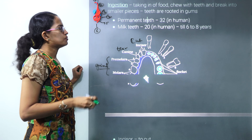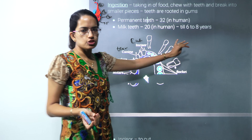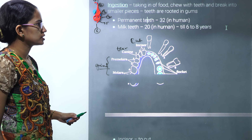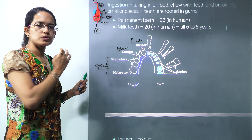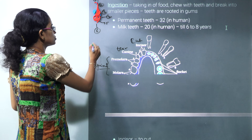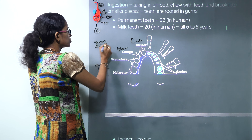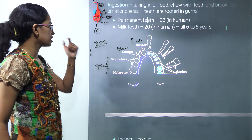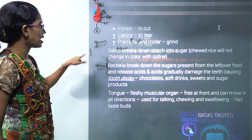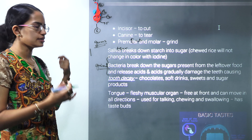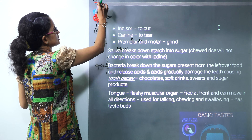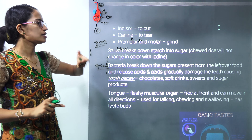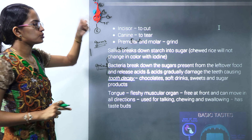Children have milk teeth, which are 20 in number, until the age of 6 to 8 years. Then permanent teeth come in adulthood, which are 32 in number. Teeth are rooted into the gums, and this root is supplied by blood vessels as well as nerves. The salivary glands in the mouth break down starch into sugar.